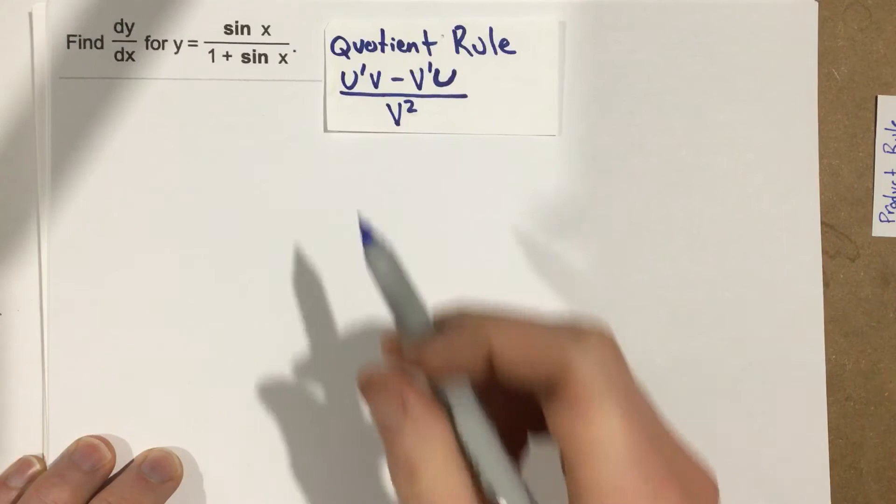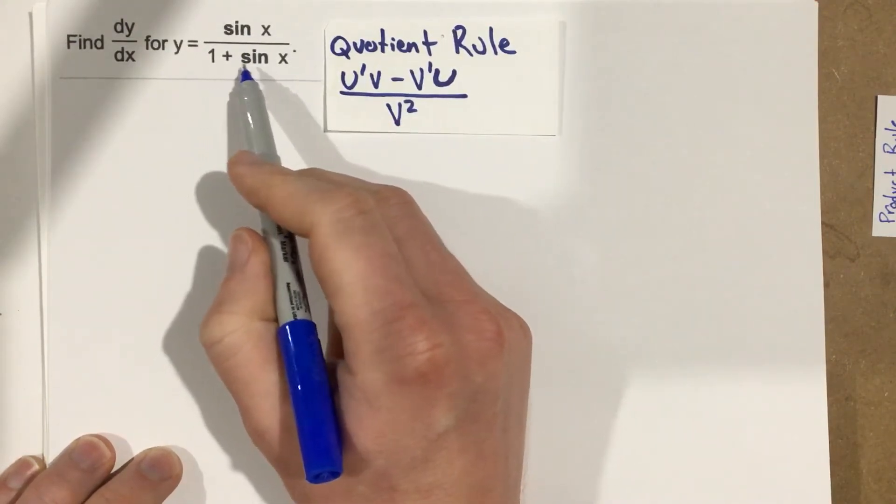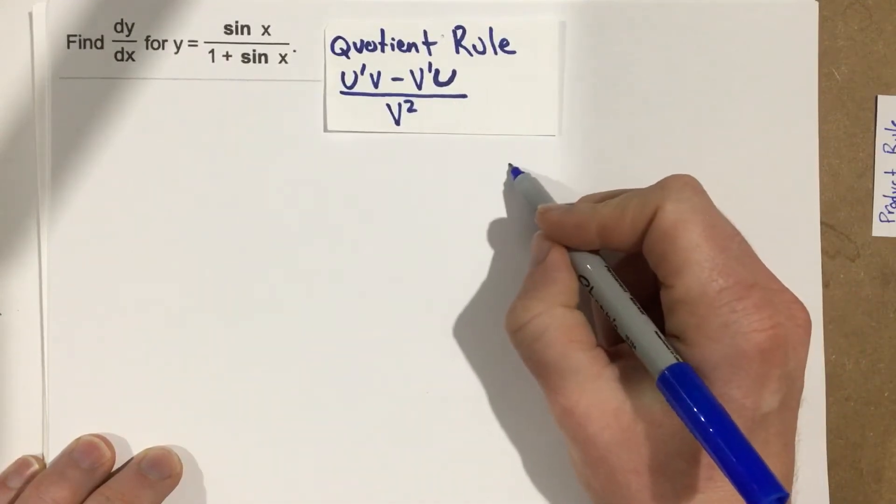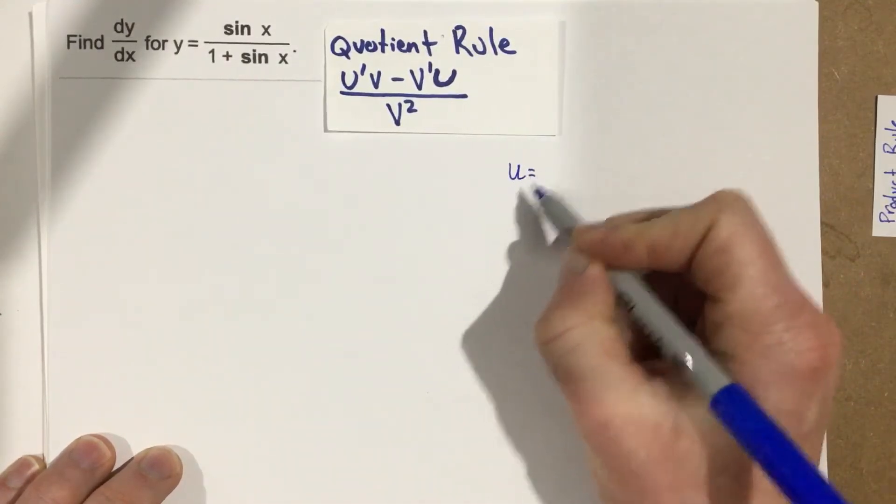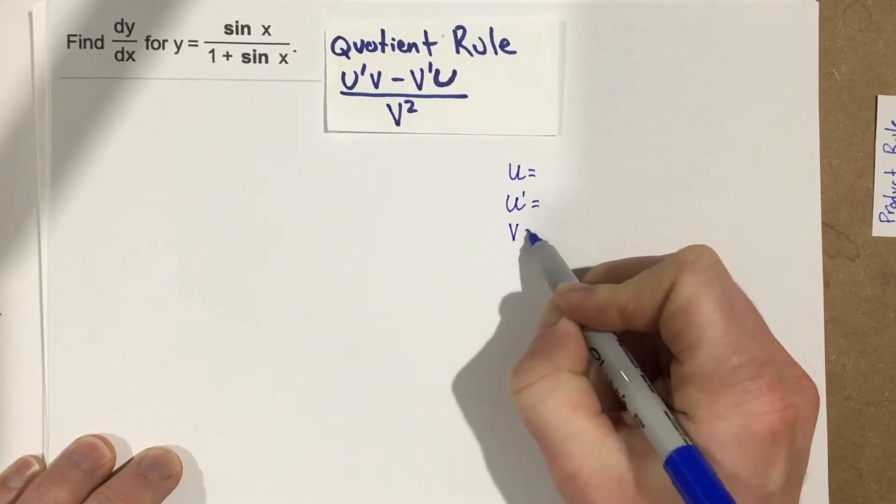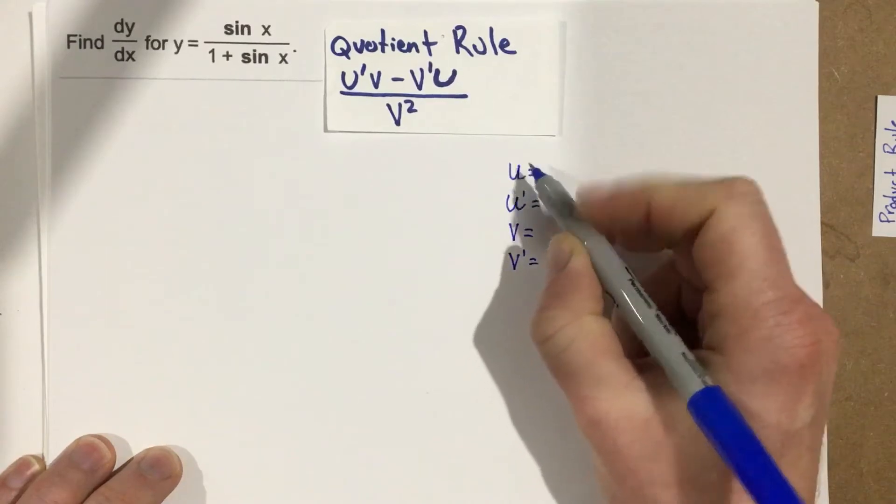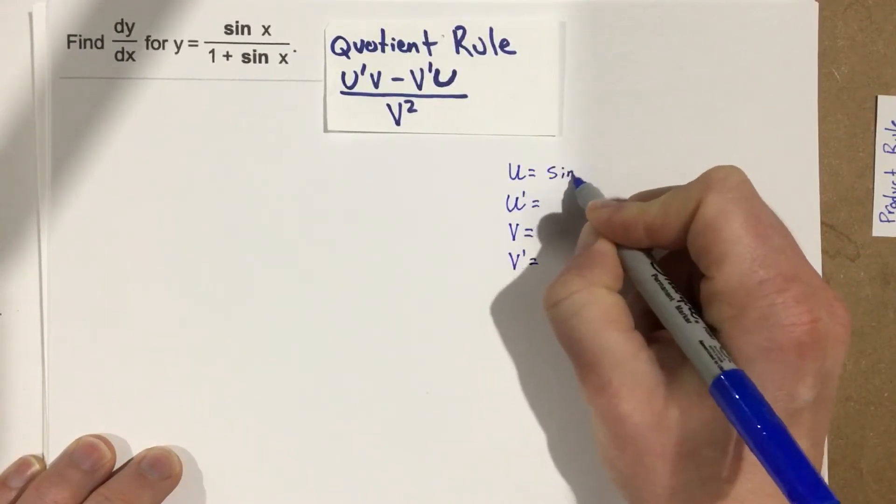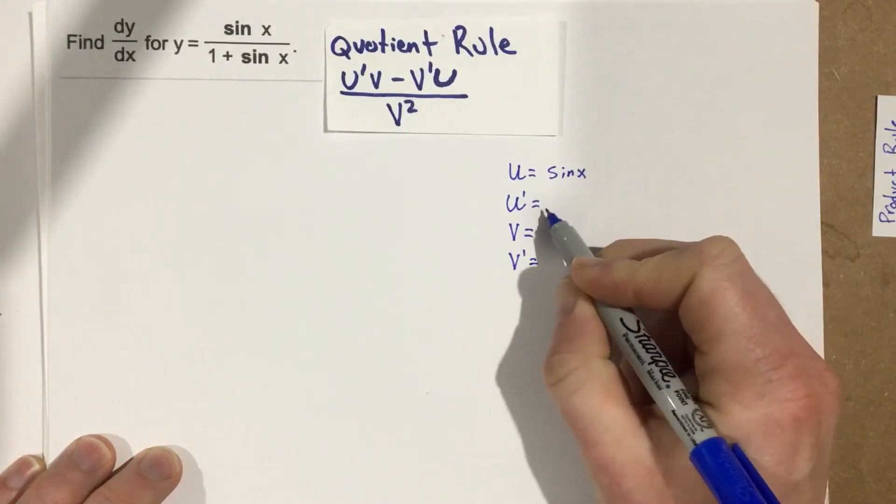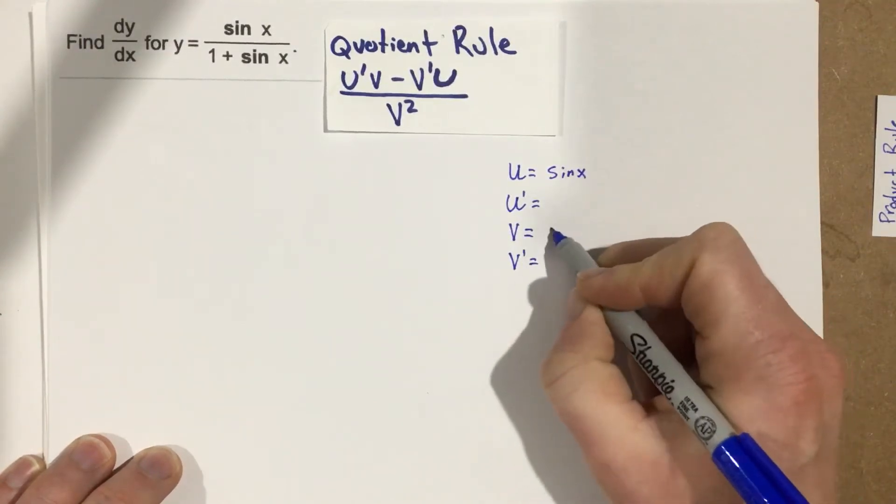So let's start by writing that we're going to say sine x is u and v is 1 plus sine x. So I'm going to write here u, u prime, v, and v prime. So u is sine x. u prime is, well, let's go to v. v is 1 plus sine x.